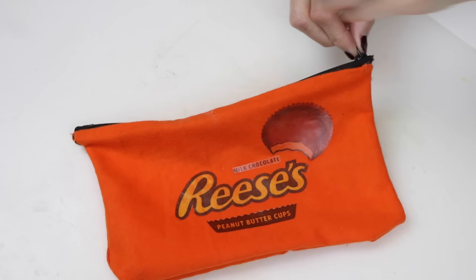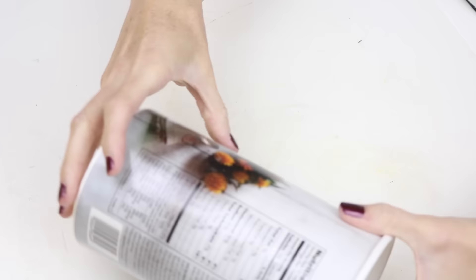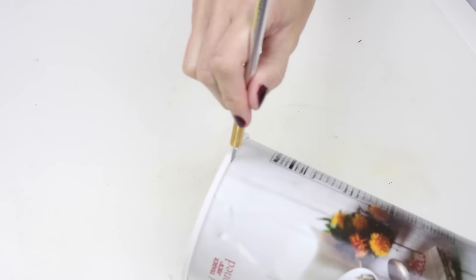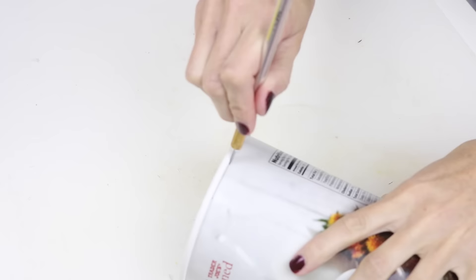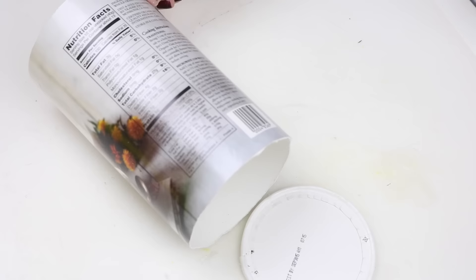The next one I'm going to show you is probably better suited for a makeup bag but can still be used as a pencil case, as it is a little bit bigger. For this one, I'm using an oatmeal container. I'm going to cut off the top rim part and then I will also cut off the bottom. Make sure to save the bottom because we will be using that later on.